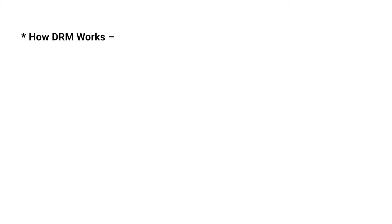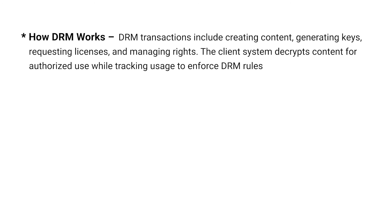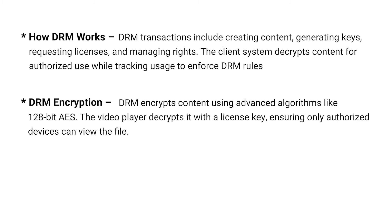How DRM works: DRM transactions include creating content, generating keys, requesting licenses, and managing rights. The client system decrypts content for authorized use while tracking usage to enforce DRM rules. DRM encrypts content using advanced algorithms like 128-bit AES. The video player decrypts it with a license key, ensuring only authorized devices can view the file.